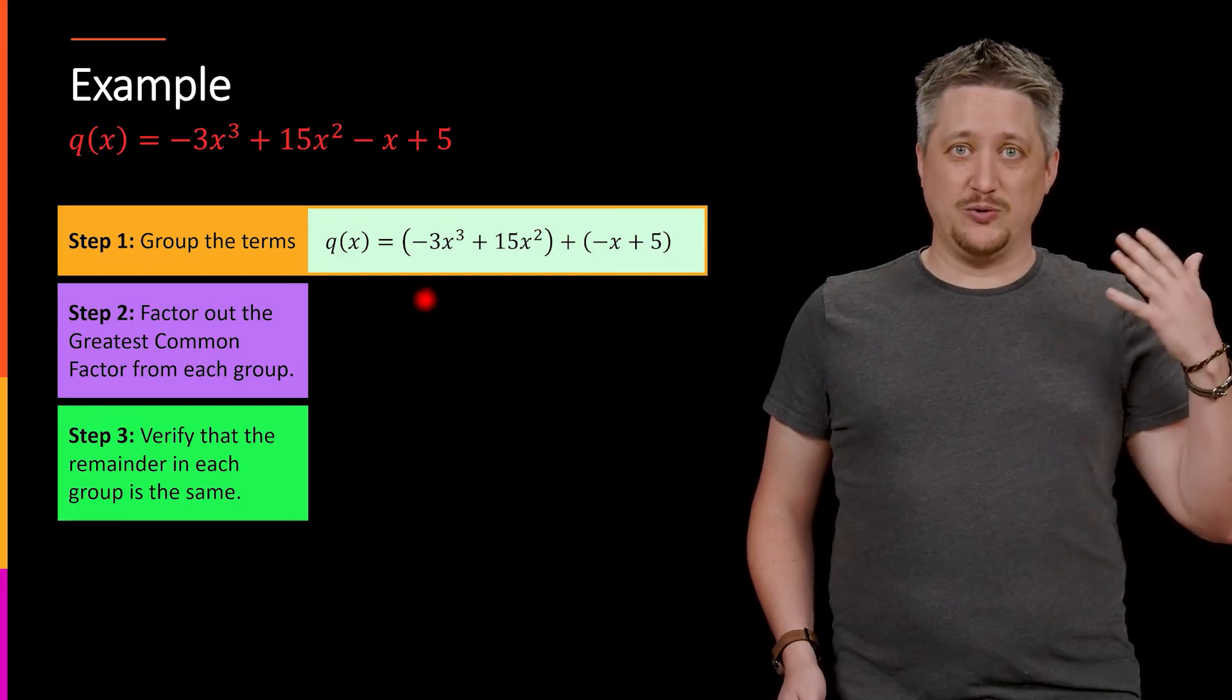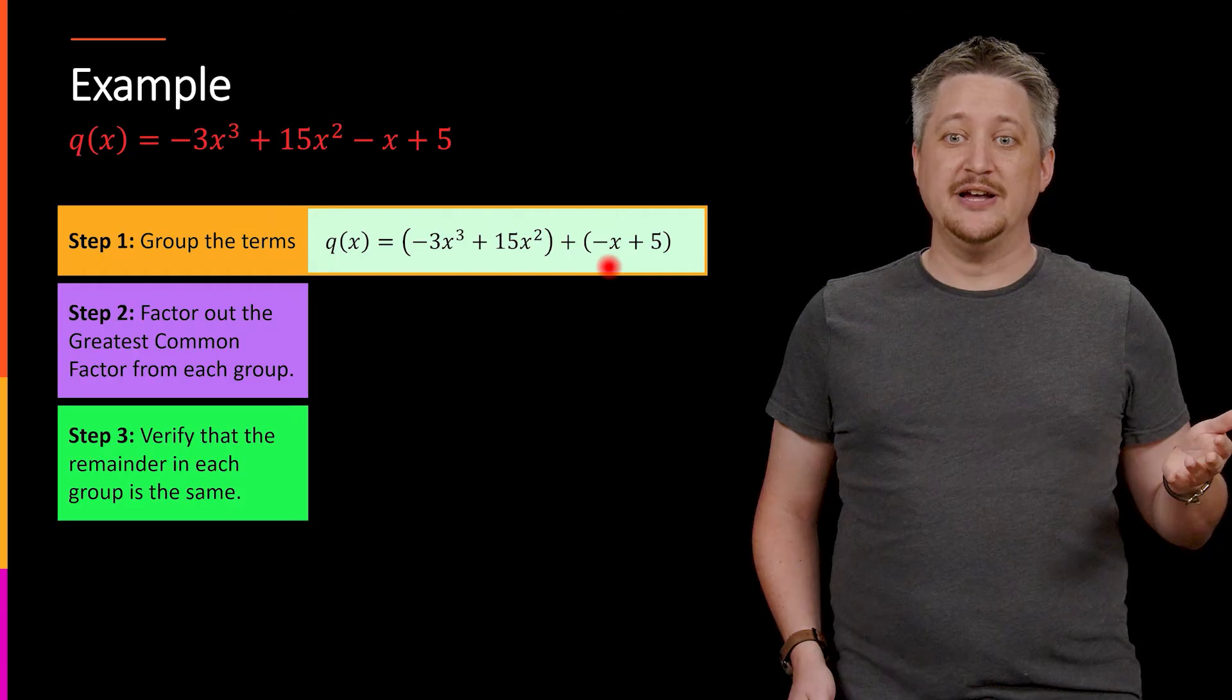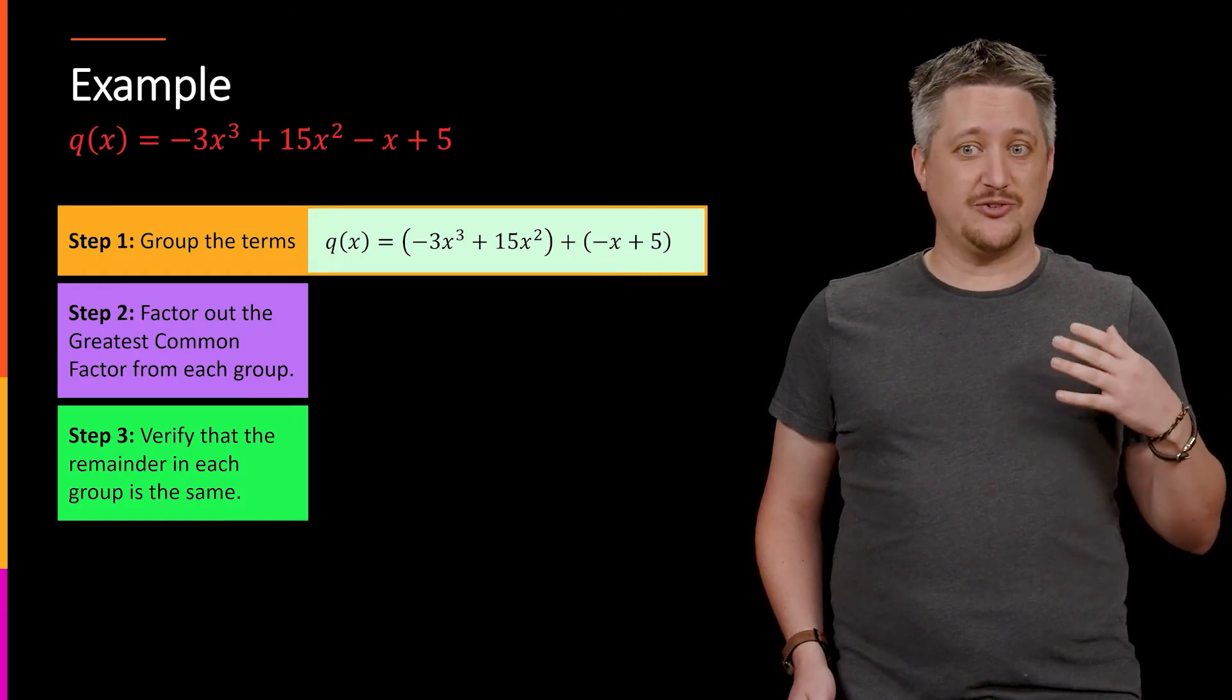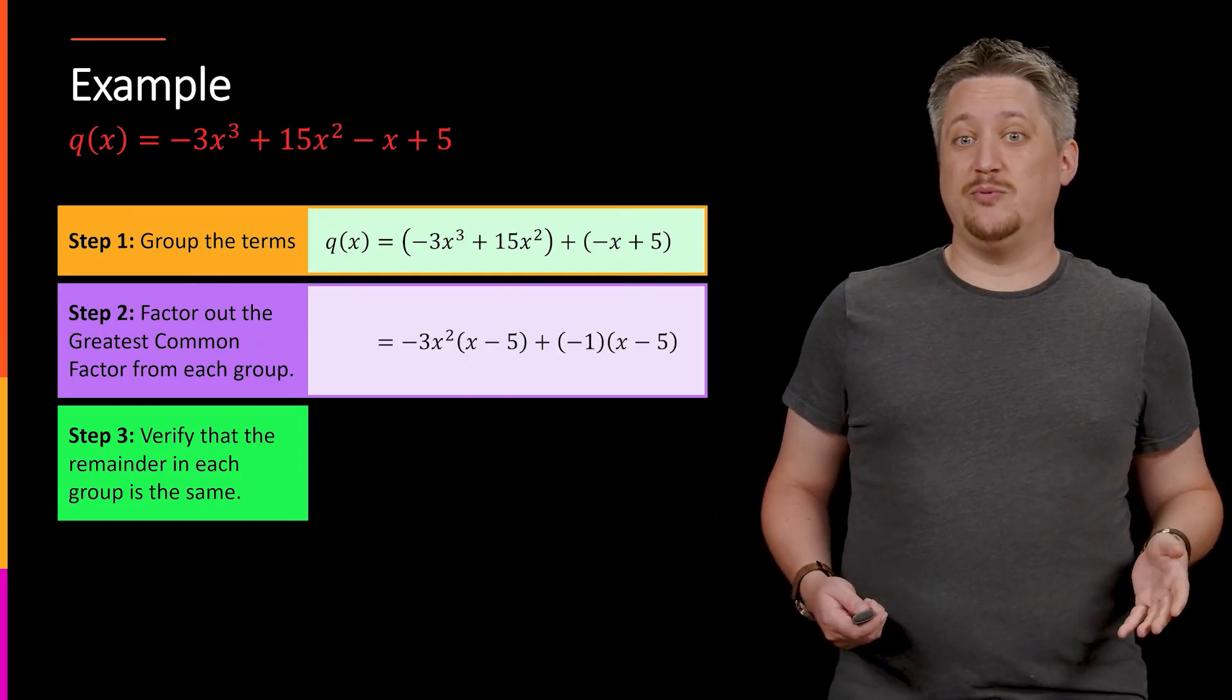If I'm going to pull the negative out to make the first term here positive, I should definitely pull out the negative here and make sure that the first term there is positive. So I'm going to pull out a negative 3x² and a negative 1.